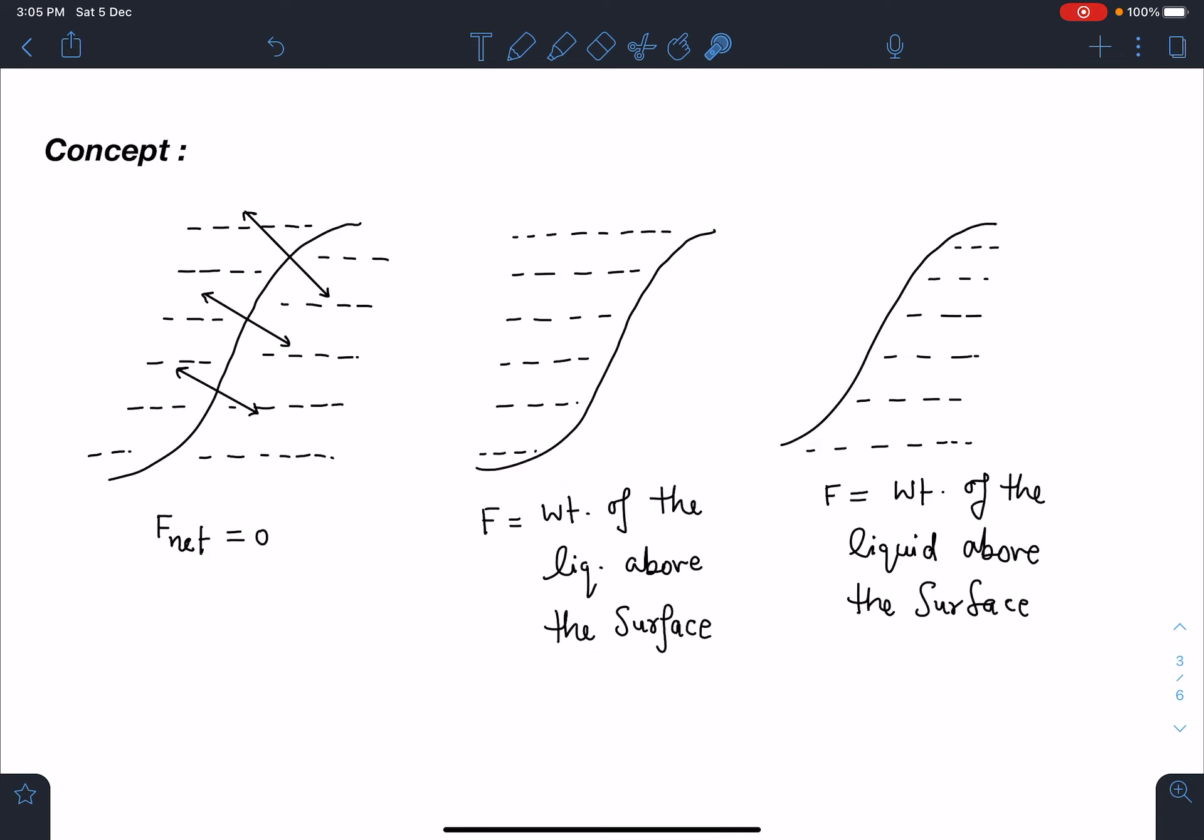Now in this situation though liquid is below the surface, using the analogy of first one and second one I can easily say if liquid was present this side also, net force on the surface would have been zero.